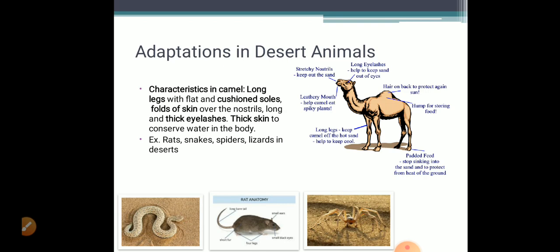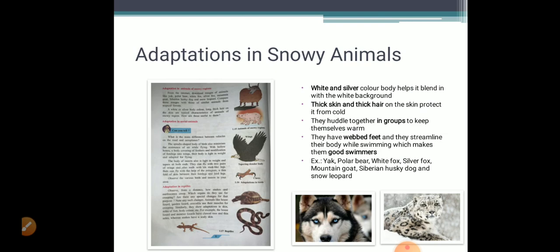Let us continue with the adaptation in animals of snowy regions. From the internet we can download some images of animals like the yak, the polar bear, the white fox, the silver fox, the mountain goat, the Siberian husky dog and a snow lizard. In the slide you can see the snow leopard and the husky dog. How are these animals adapted to the snowy regions? Mostly, all of them have a white or a silver body color.